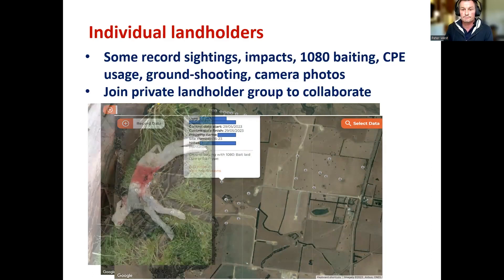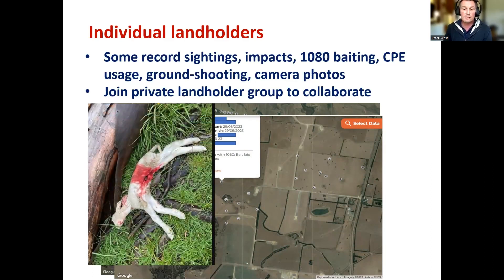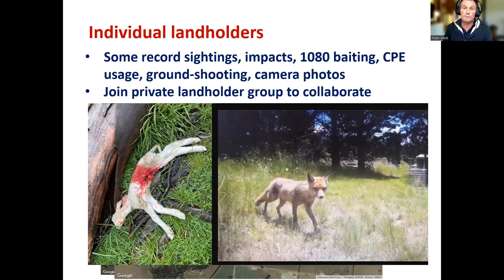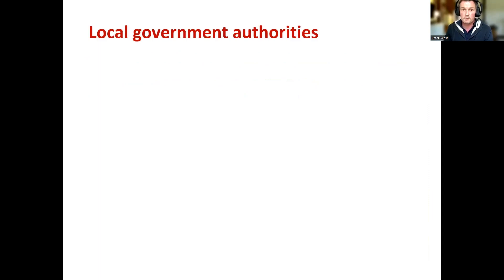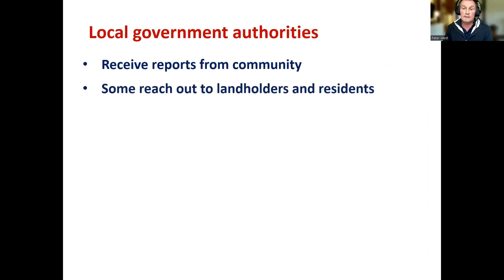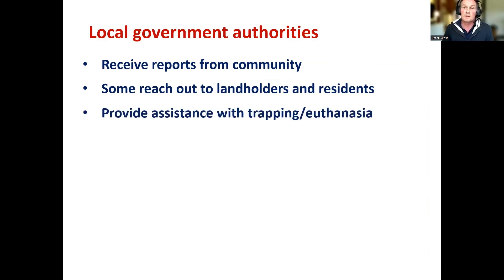Here's an example where a landholder on a rural property in New South Wales has been documenting their control and 1080 baiting usage to reduce predation pressure from foxes on lambs. Unfortunately, foxes in Australia prey on a lot of wildlife and lambs — this is why we are all committed to improving the way foxes are managed to reduce the problems they're causing. We also see lots of photos from monitoring cameras. Local government authorities in some places around Australia receive reports from the community via FoxScan, and some groups reach out to landholders and residents to provide assistance — though this is not always the case, so check with your local government authority first.